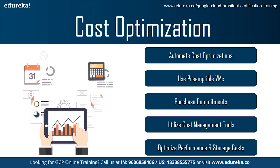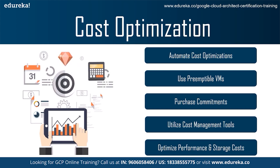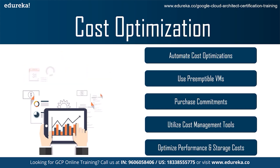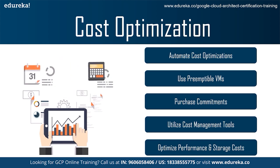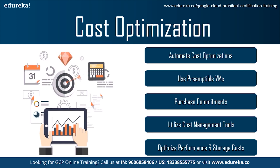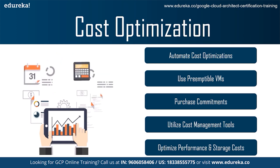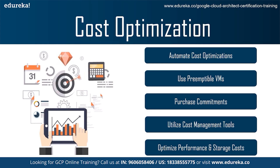This is a huge saving if the workload you are trying to run consists of short-lived processes or things that are not urgent and can be done anytime. The third practice is Purchase Commitments. Sustained usage discounts apply automatically once your instance is online for more than 25% of the monthly billing cycle and can net you a discount of 30% depending on instance type. Committed use can get you a discount of up to 57% for most instance types and up to 70% for memory-optimized types.